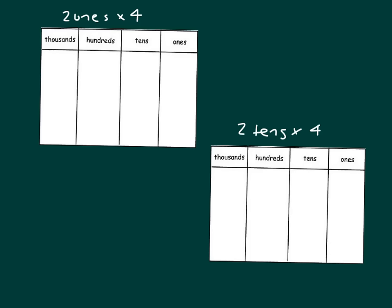First, let's show two ones times 4 within our place value chart, making sure to circle each group of two ones. So there's one group of two ones, two, three, and four. So two ones times 4 does equal two, four, six, eight. Eight ones.